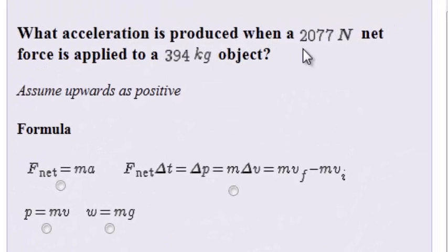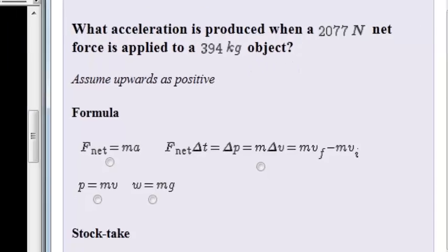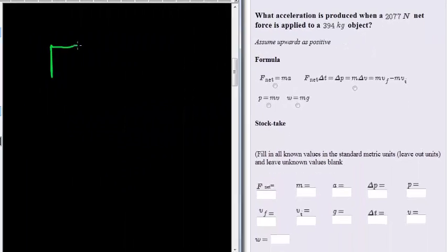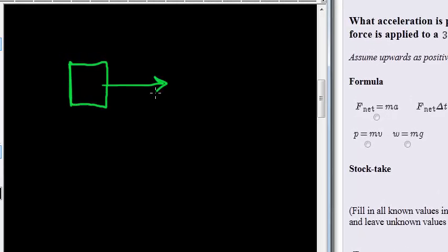What acceleration is produced when a 2077 newton net force is applied to a 394 kilogram object? So here we have an object and it doesn't matter in which direction. All we know is that acceleration will also be in that direction, and our force that's applied in this direction is going to change the motion of this object.